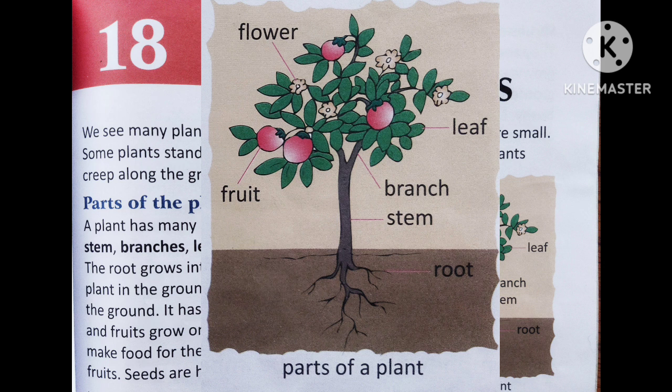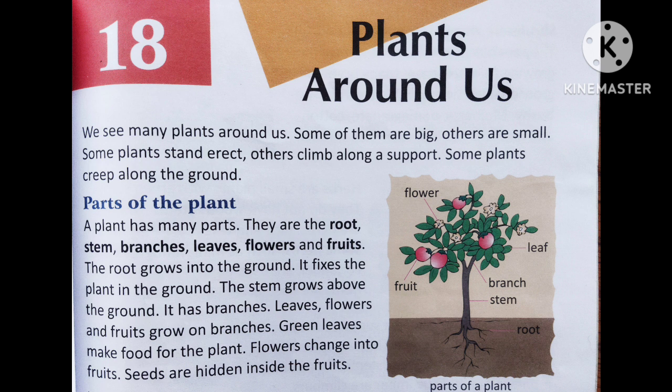The stem grows above the ground and holds different other parts of the plant like the leaves, flowers, and fruits. The green leaves of the plant make food and prepare food for the plant. Flowers become fruits later on, and you can see seeds inside the fruits. Those seeds grow into new plants.